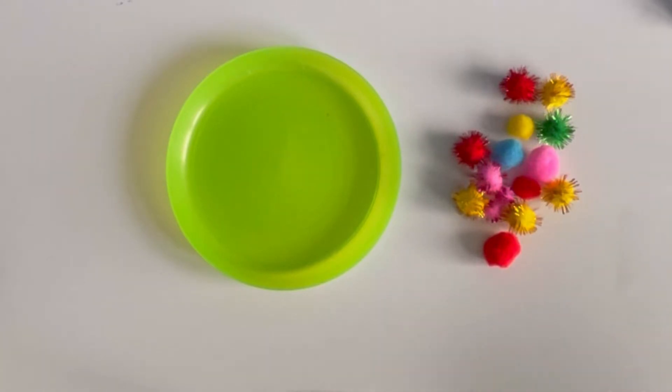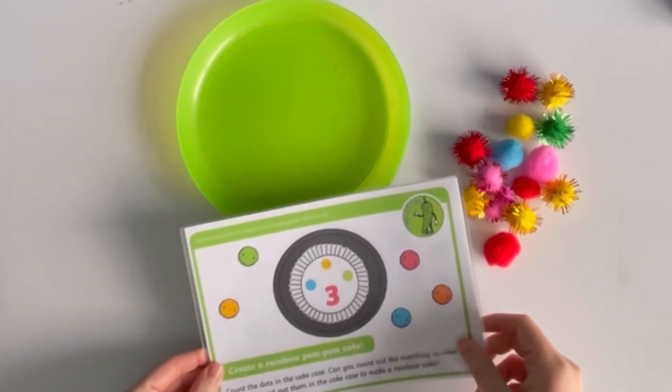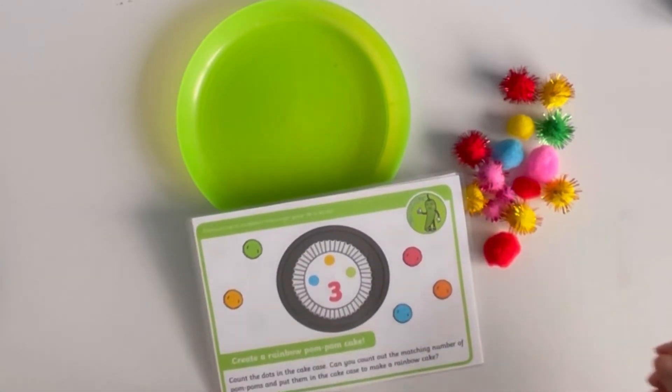To create a rainbow pom-pom cake you will need pom-poms and a plate. You could use this in an activity tray as a reusable activity or children could glue their pom-poms onto a paper plate to make their own cake.